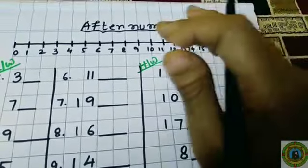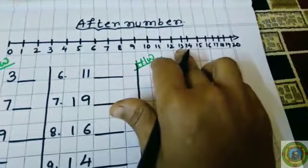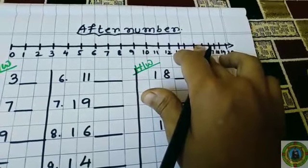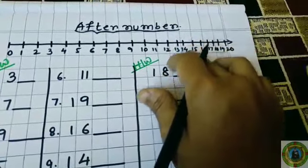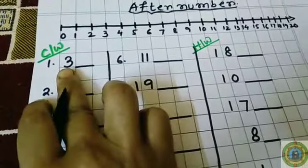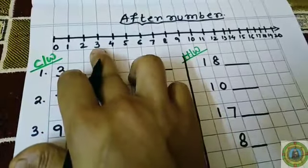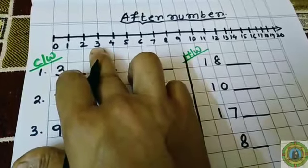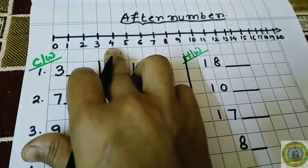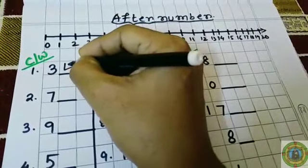After number means forward counting, or we can say next number. So if we ask, what comes after 3? 3 is here. What comes after 3? The answer is 4. So we have to write 4.